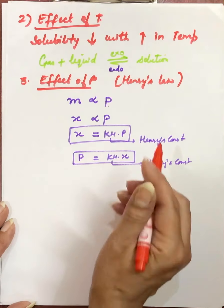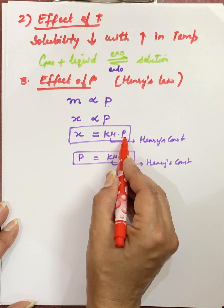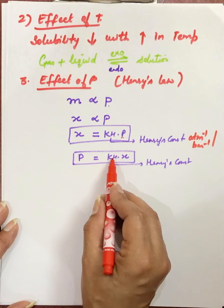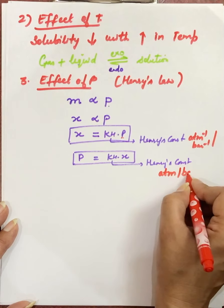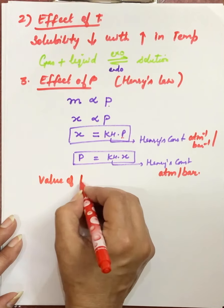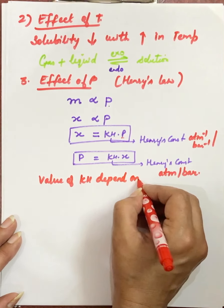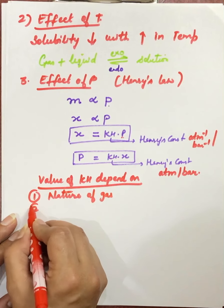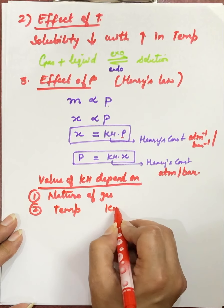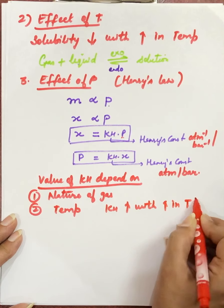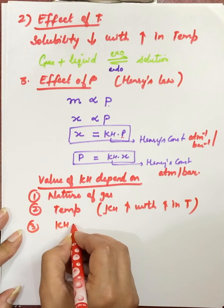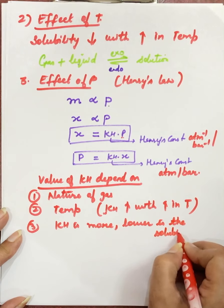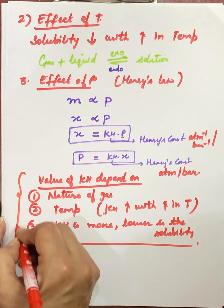If we use X = KH × P, then KH and P are inversely related, so the unit of KH is per atmosphere or per bar. If we use P = KH × X, then KH has units of atmosphere or bar. The value of KH depends on the nature of the gas — every gas has a different KH value — and on temperature. KH increases with increase in temperature, and a higher KH means lower solubility of the gas in the liquid.